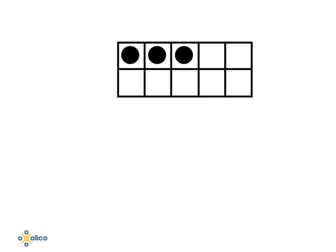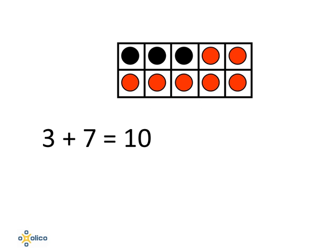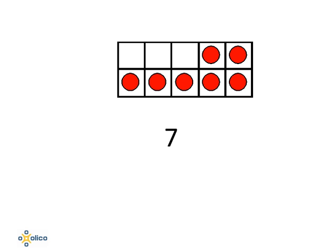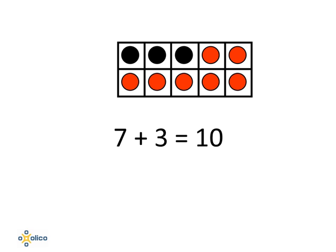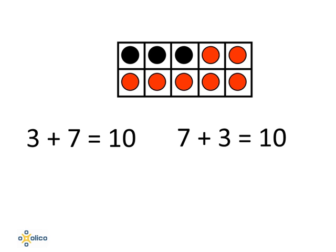This frame allows us to see easily, for example, that we have three dots in the frame and seven dots missing. So 3 plus 7 will make up 10. But we can also see from this that 7 plus 3 equals 10, and get two facts related to addition. 3 plus 7 is 10, and 7 plus 3 is 10.